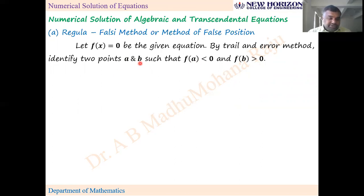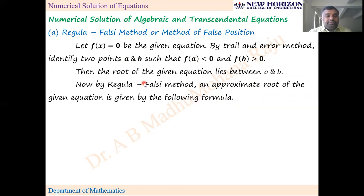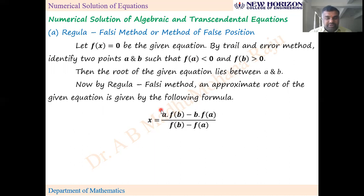If you identify these two values in such a way, then the root of the given equation lies between a and b. By Regula-Falsi method, an approximate root of the given equation is given by the formula: x = [a·f(b) − b·f(a)] / [f(b) − f(a)]. This is the formula you are going to use.